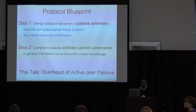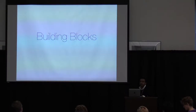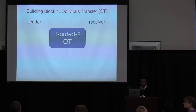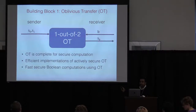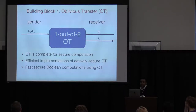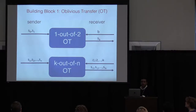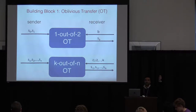The main building blocks people have considered for secure computation include, of course, oblivious transfer. This is extensively used in Boolean computations and is complete for secure computation. There are many efficient implementations, and this has led to all the recent improvements in fast Boolean secure computation. I want to talk about a slight extension — K out of N OT — where the receiver can get an arbitrary K subset from N entries of the sender.